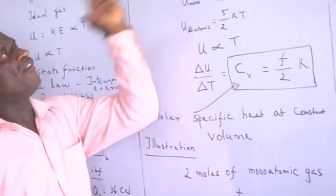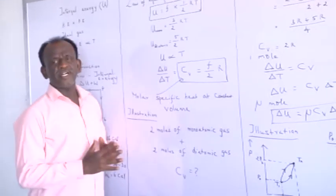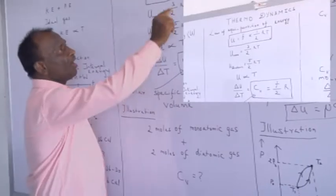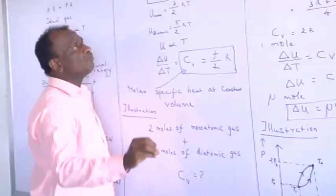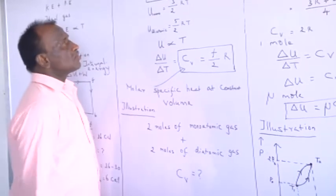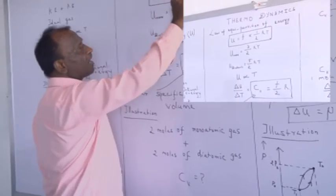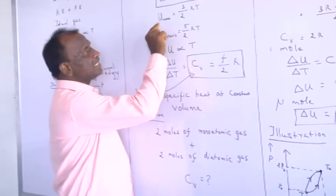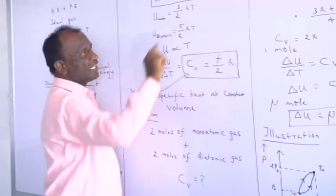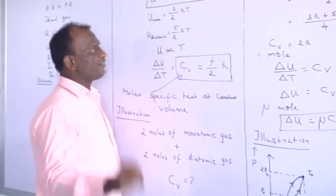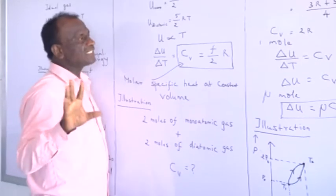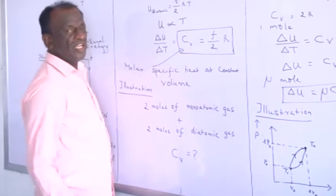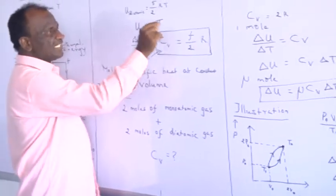The law of equipartition of energy states that each degree of freedom contributes (1/2)RT to the internal energy of one mole of a gas. The general formula is U = (F/2)RT, where F is the number of degrees of freedom. For a monoatomic gas, the internal energy is (3/2)RT because a monoatomic gas has 3 degrees of freedom. For a diatomic gas with 5 degrees of freedom, U = (5/2)RT. This internal energy is a function of temperature.